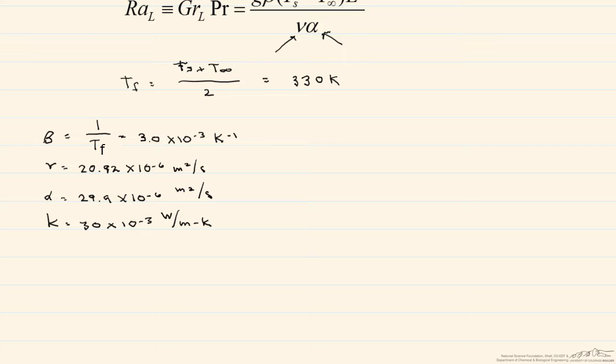For horizontal plates, it's suggested that our characteristic length, that L, should be the surface area of the plate divided by its perimeter.